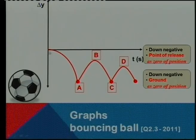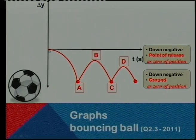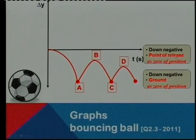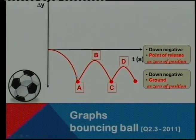Can you see where zero is there? This is my y-axis, that's my x-axis, that's my zero. Which point is that? Point of release. That's why I say point of release is a zero position, but this time down is still negative.